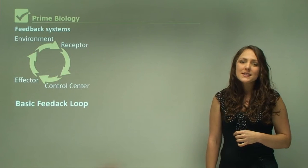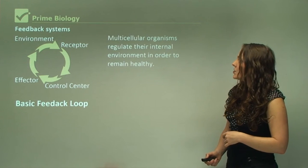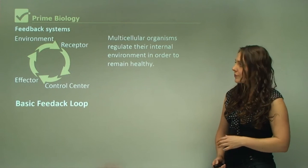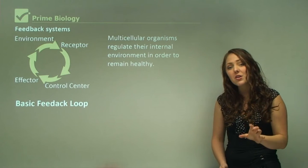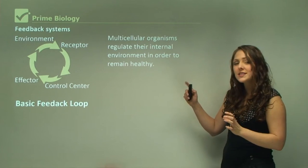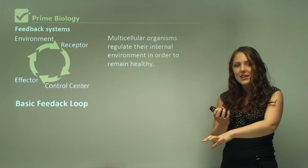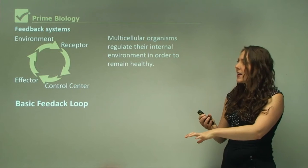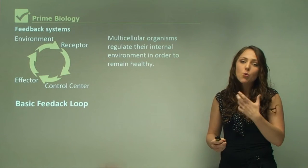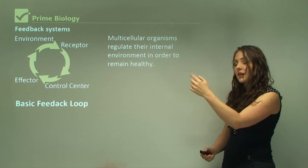We have feedback systems in our body and these help maintain our internal environment. Multicellular organisms regulate their internal environment in order to remain healthy. This picture here shows that the environment might change or react with us, and our receptors detect that. Receptors are found on our skin and throughout our body — in our blood and elsewhere — and they detect any changes. The stimulus is sent to the receptor, which then goes to the control.